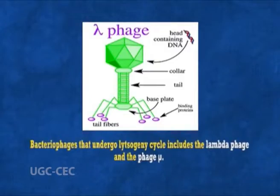Under certain conditions, each bacterial cell in a state of lysogeny can produce and release new progeny bacteriophage spontaneously. Such a bacterial cell is said to be a lysogen or lysogenic. Bacteriophages that undergo the lysogeny cycle include the lambda phage and the phage mu.